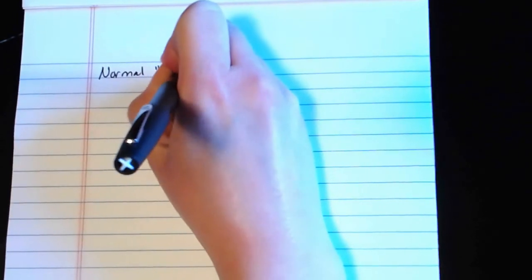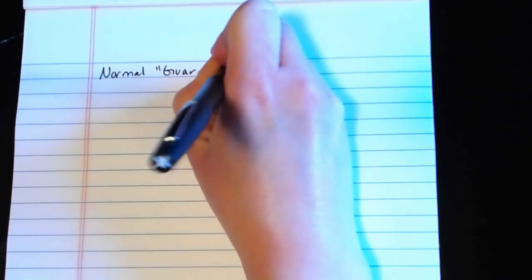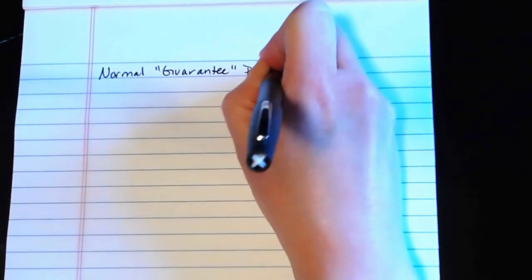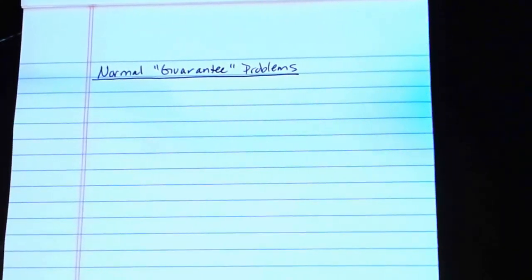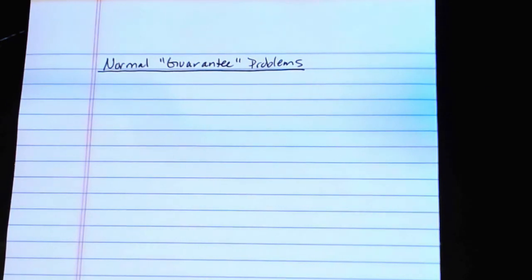In this video we're going to take a look at these normal guarantee problems. They won't all specifically be dealing with a guarantee, but one of the reasons that they get called guarantee problems is because this is how, when you buy some kind of electronics, there's that guarantee period.